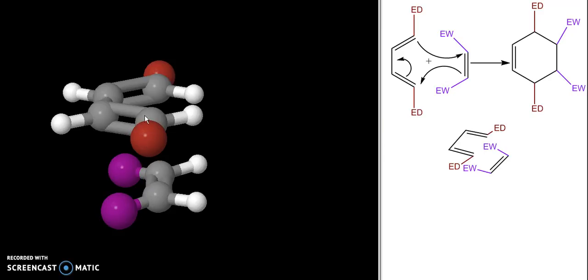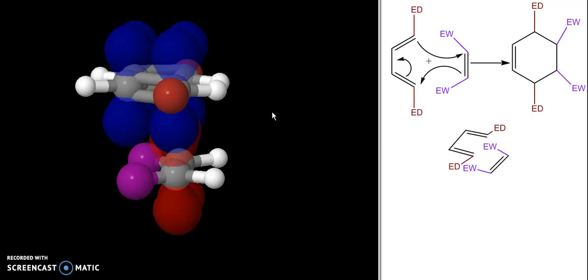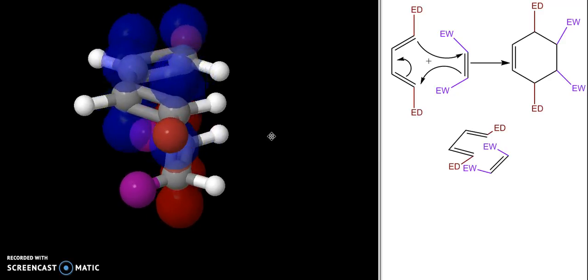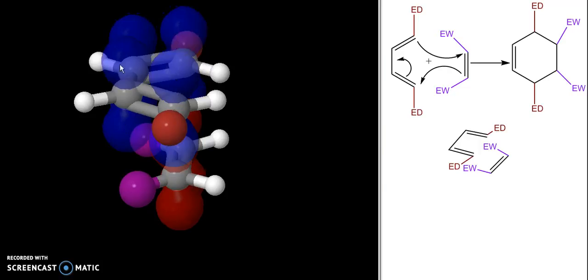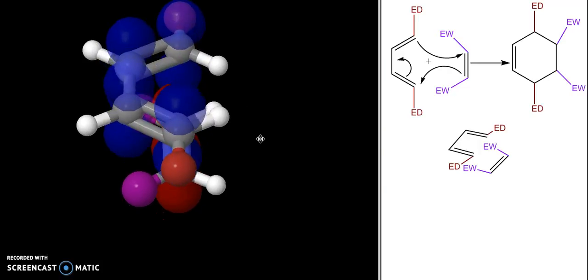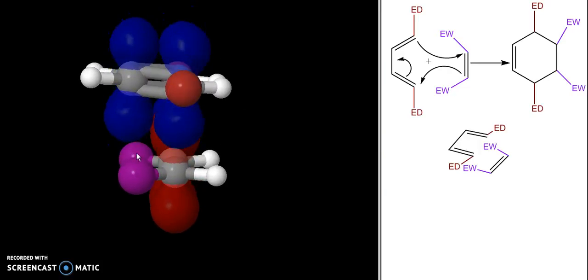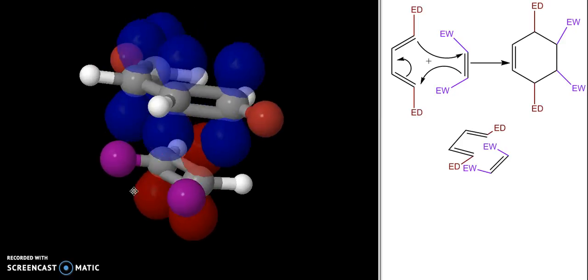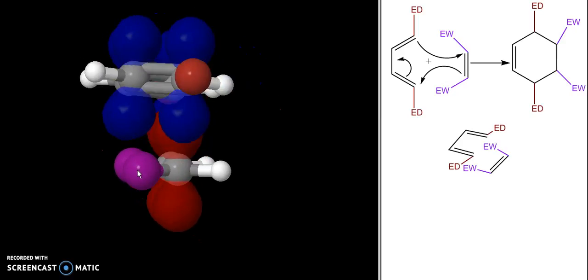Focusing just on the blue orbitals on my diene, you can see that the purple electron withdrawing groups are hanging out right underneath these orbitals. Because there are electrons in these orbitals, they actually help stabilize the electron withdrawing groups, which are a little bit electron deficient.